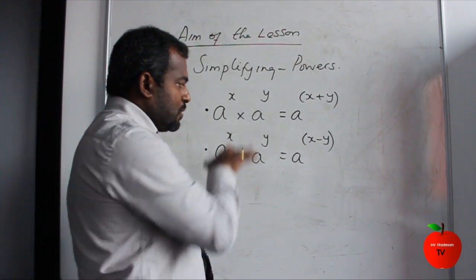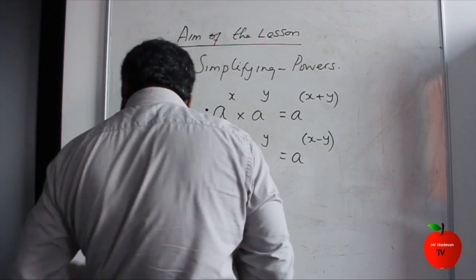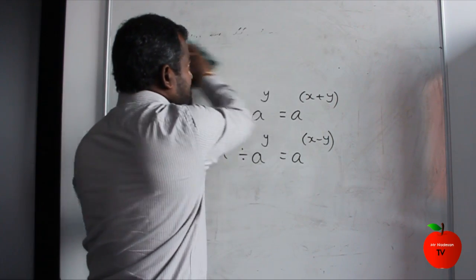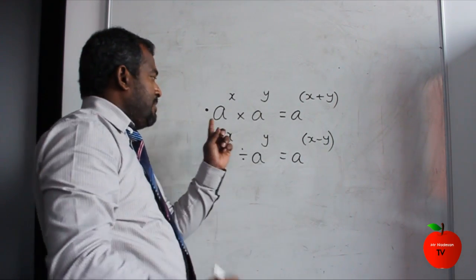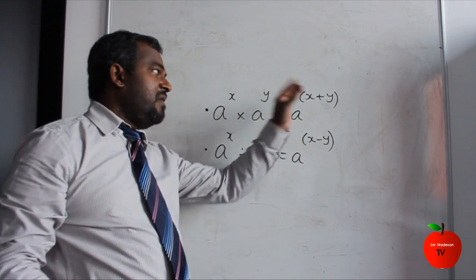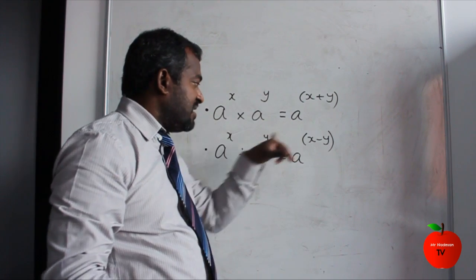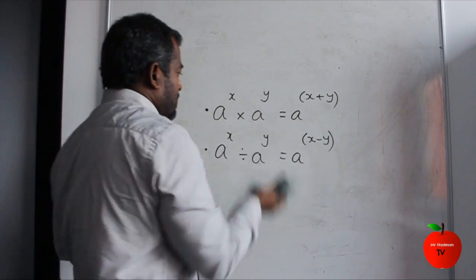Now, we are talking about two questions. Let's say the first one. Remember again: when the base is equal and you multiply, you add the powers together. When the base is equal and you divide, you subtract the powers.